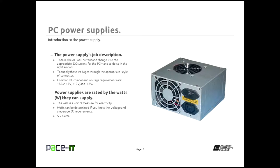Now let's move on to the actual power supply and its job description. Its job is to take the AC wall current and change it to the appropriate DC currents for the PC, and to supply it in the right amounts through the right plugs. Common PC component voltage requirements include positive 3.3 volts, positive 5 volts, positive 12 volts, and negative 12 volts. Yes, you can have a negative electrical charge, and the power supply is responsible for supplying that negative 12 volt DC current.